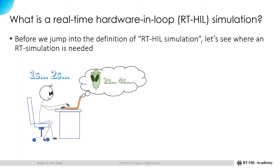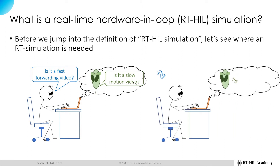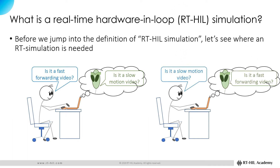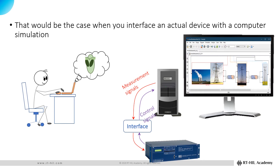From your perspective, the UFO would look like a fast-forwarding video, whereas from the UFO's point of view, you would look like a slow-motion video. Conversely, if the time in the UFO's world runs slower than it does in our world, then from your perspective the UFO would look like a slow-motion video, whereas from the UFO's point of view you would look like a fast-forwarding video. In either case, you would not be able to properly communicate with the UFO. That would be exactly the case when you interface an actual device with a computer simulation.